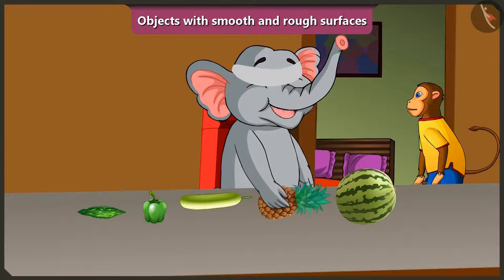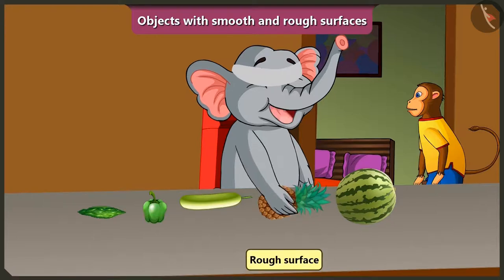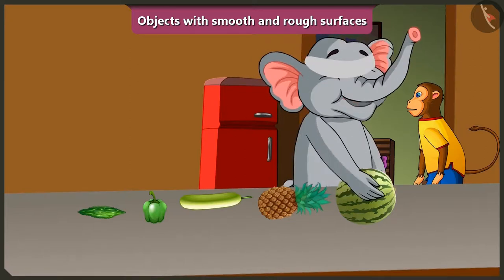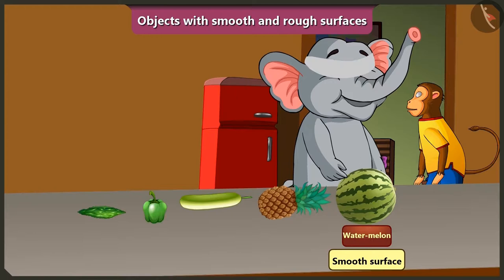My hand is not sliding easily on this surface. This is a pineapple with a rough surface. And my hand is sliding easily on this surface, so this is a watermelon with a smooth surface.